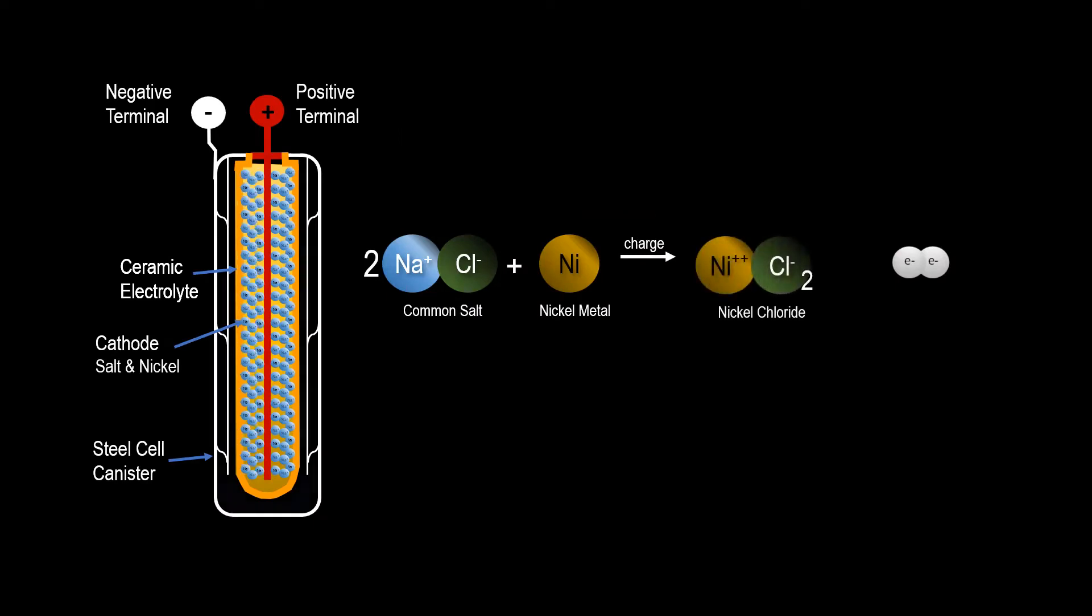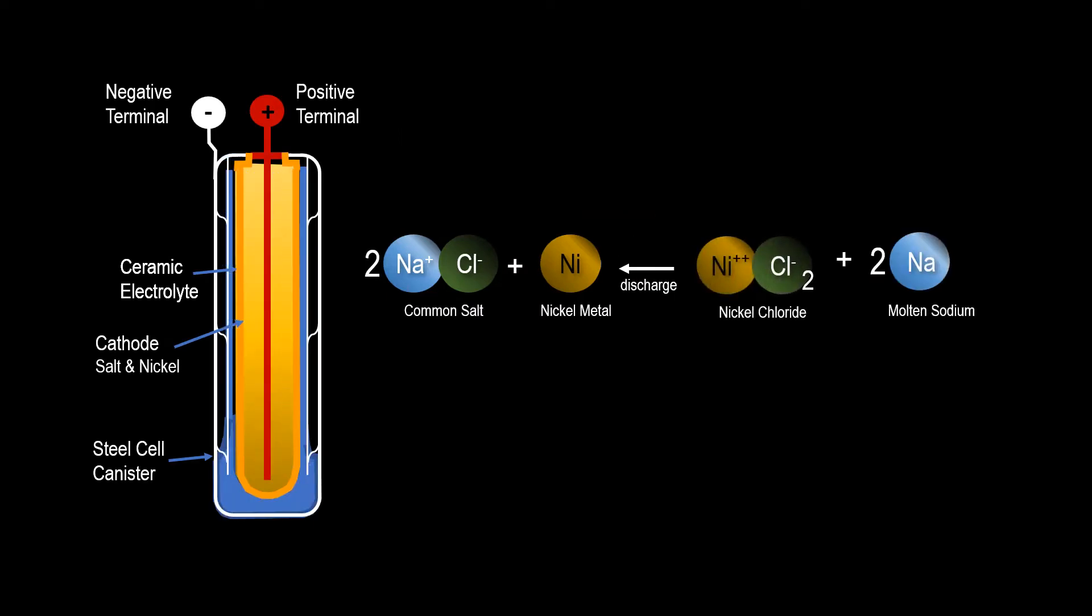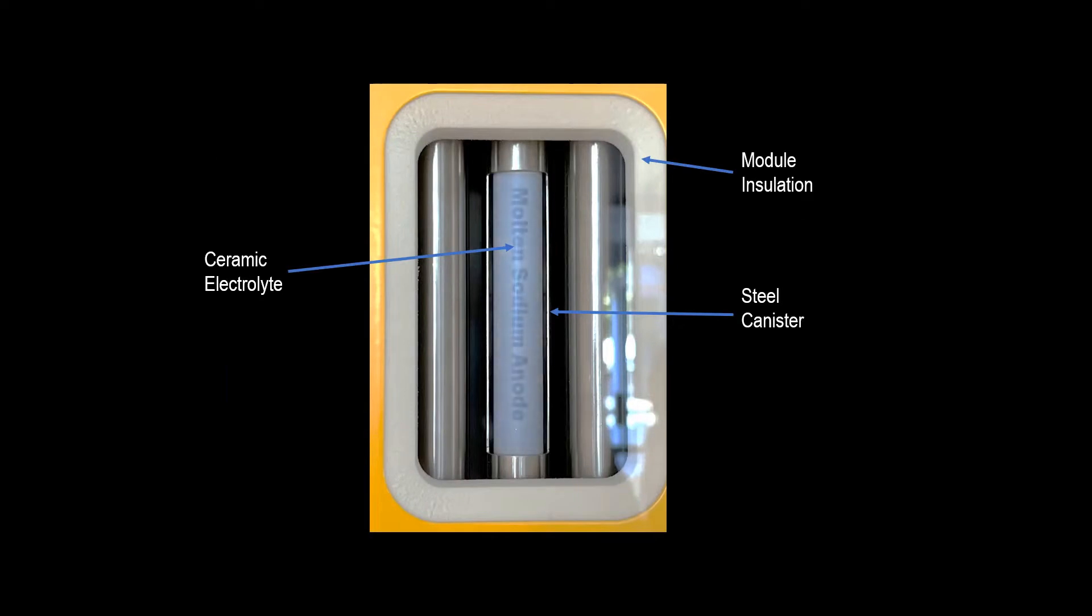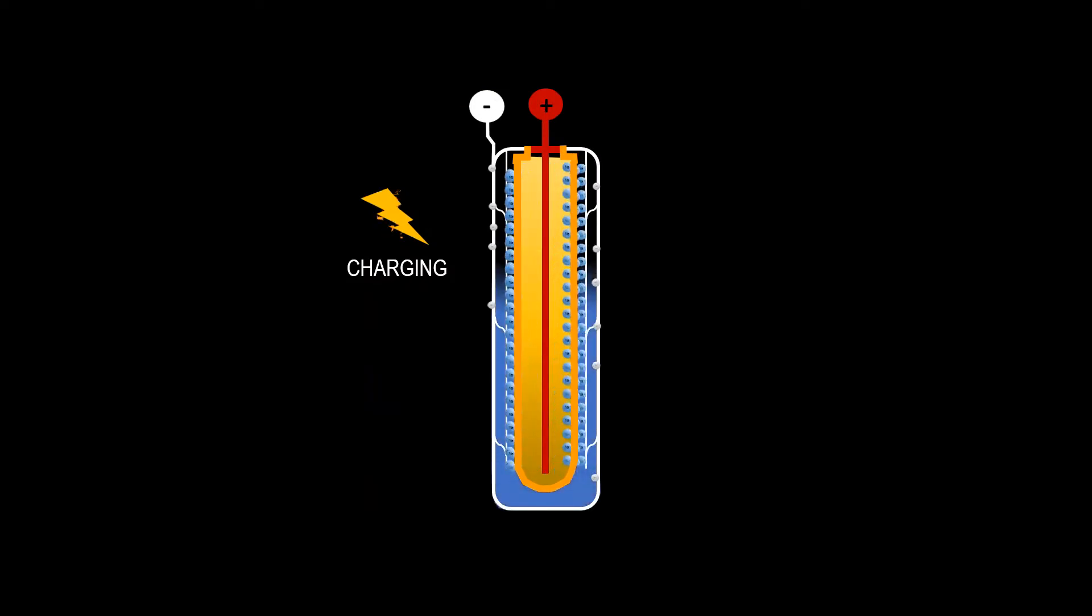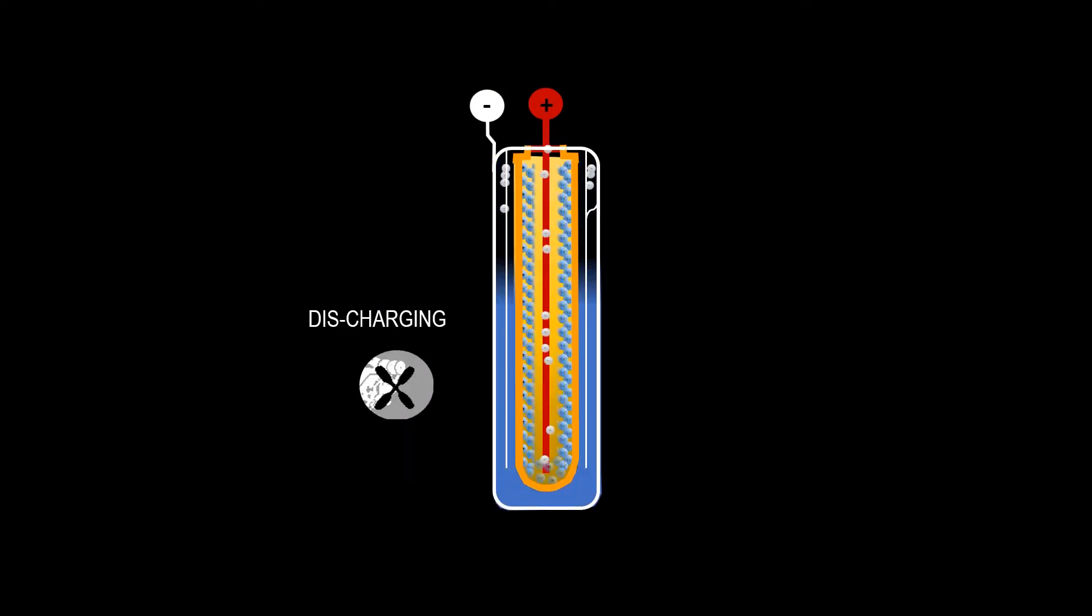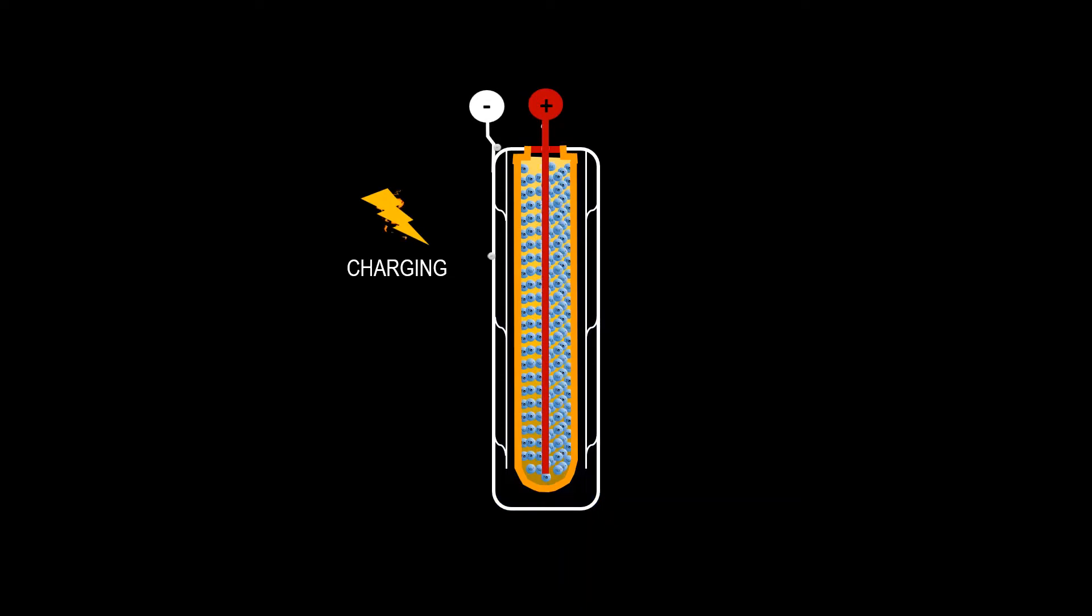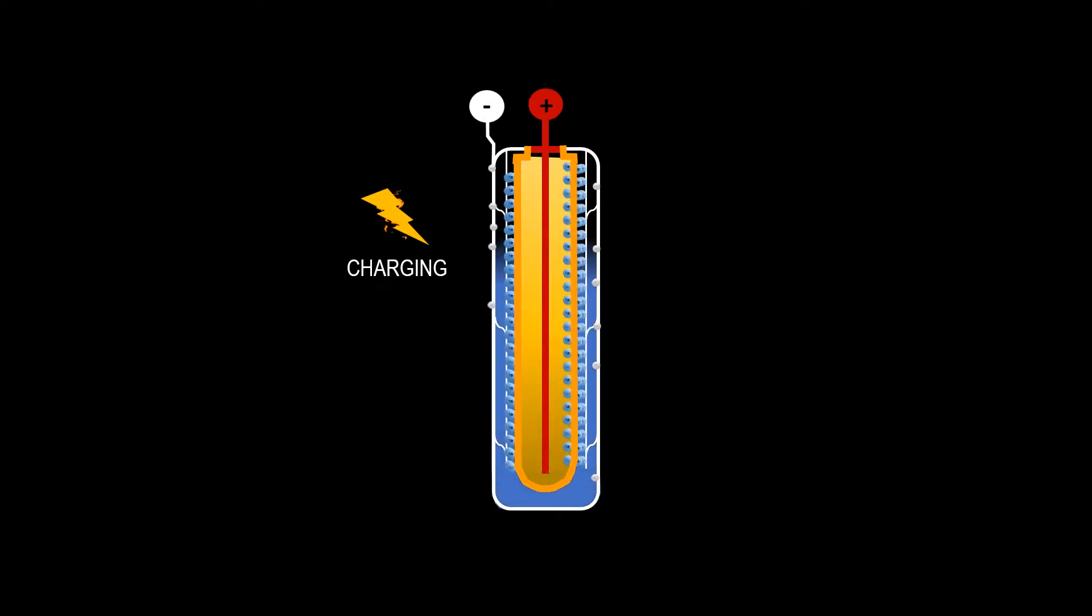During charging, migrating sodium ions form a molten sodium anode layer between the outside of the ceramic tube and the steel canister. The fact that the anode cell forms during charging and dissolves during discharge is unique for these serenergy batteries.